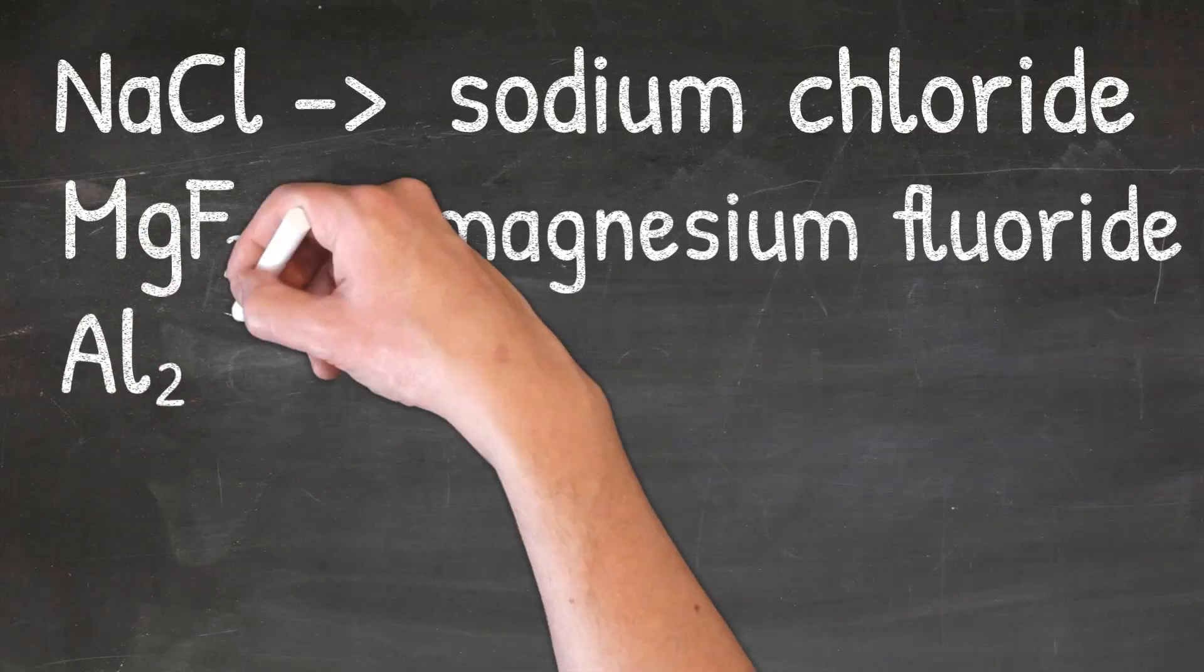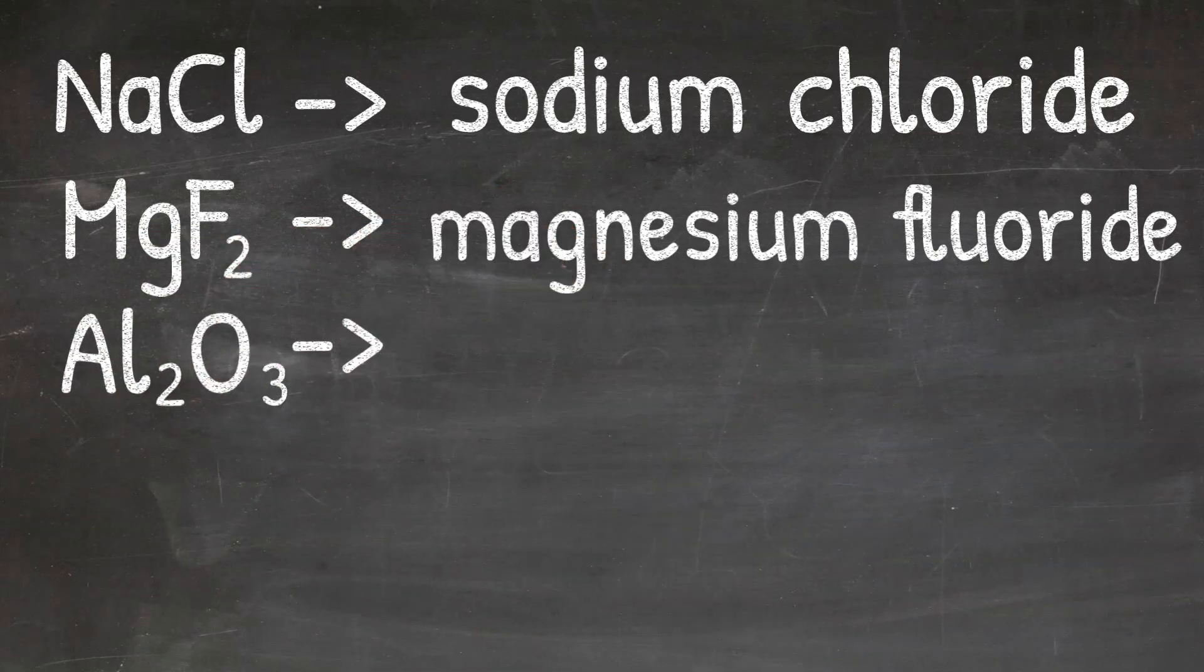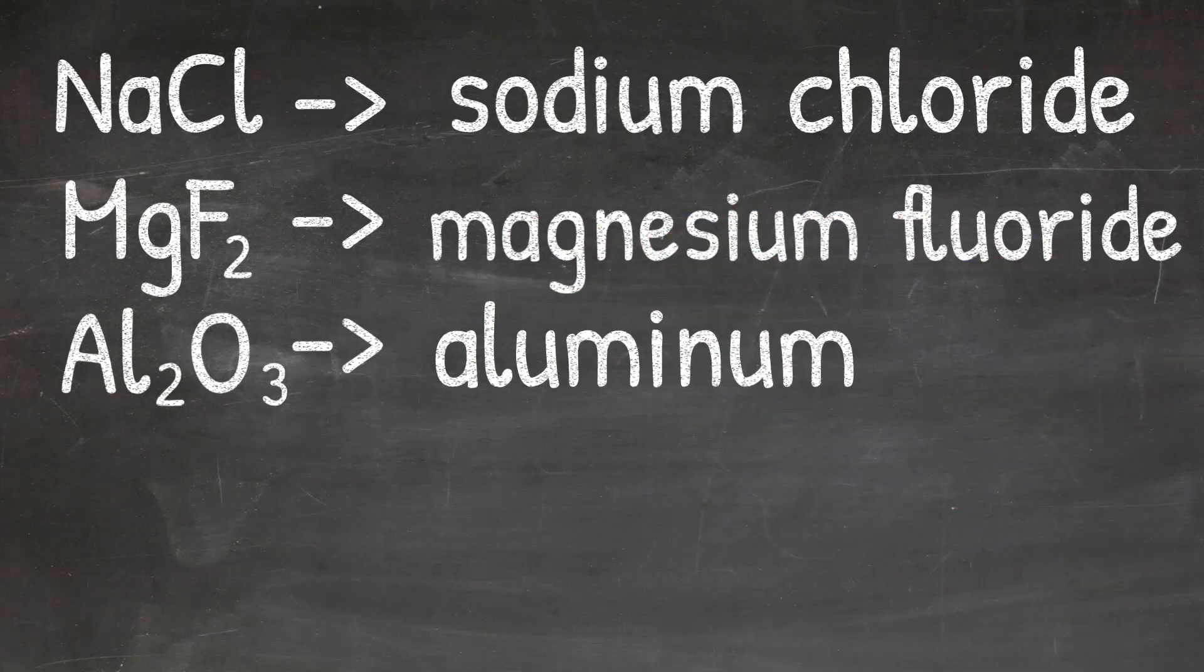In our next example, we'll look at Al2O3. The first element is aluminum, so I'll write aluminum. And then the second element is oxygen, so when I change the ending of oxygen to -ide, I get oxide. So the name of Al2O3 would be aluminum oxide.